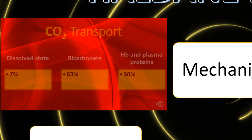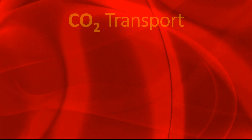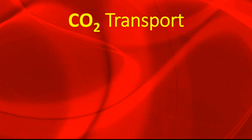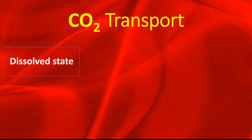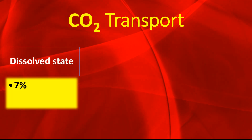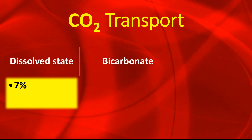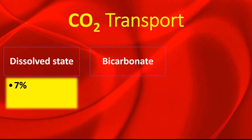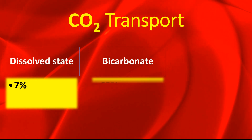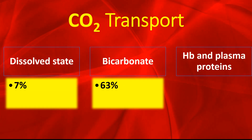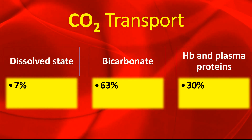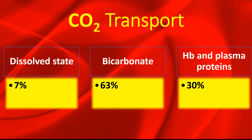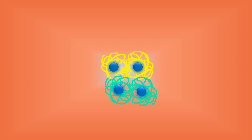Regarding carbon dioxide transport, there are three main ways. One: in its dissolved state, which accounts for 7% of the total carbon dioxide transported. Two: as bicarbonate — which we discussed in our earlier video on the chloride shift topic — that is the maximum, at 63%. Three: in combination with hemoglobin and plasma proteins, which accounts for the remaining 30%.